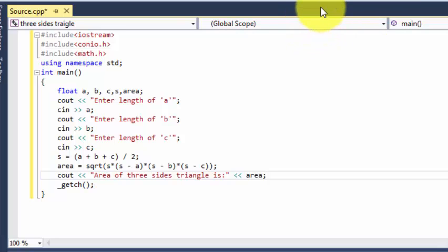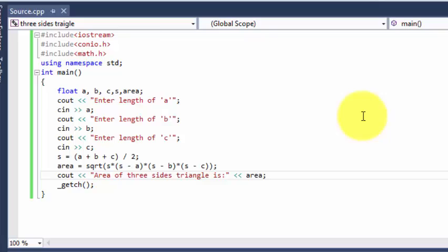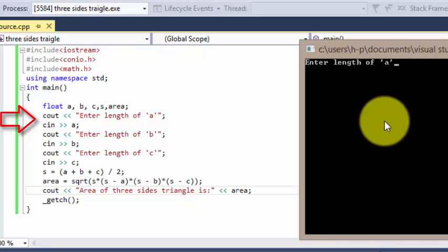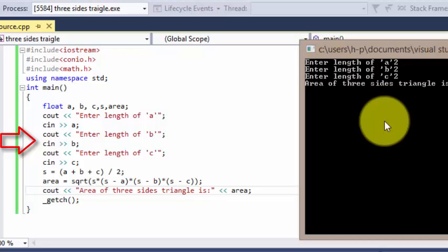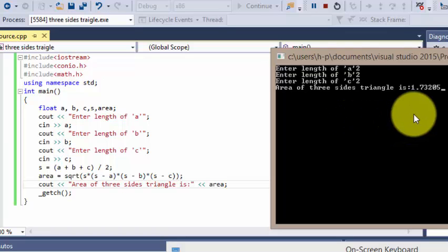Let's run this and see if we get the same answer as we calculated in our demonstration. Our program says enter the length of a, so we enter 2, then enter length of b and c. The area is 1.73, which we calculated in our demonstration.